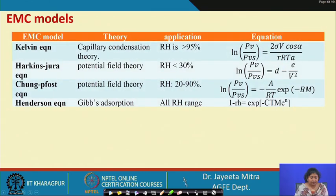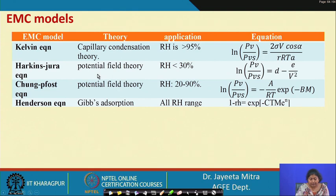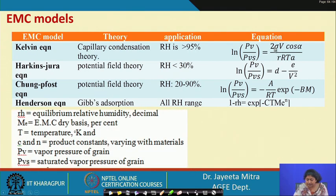There are different equilibrium moisture content models that work for different ranges of relative humidity. As the relative humidity range changes, the curve pattern changes, so different equations apply — some derived empirically, some based on physical principles. The Kelvin equation is based on capillary condensation theory and valid for RH greater than 95 percent: ln(PV/PVS) = 2σV·cosα / (r·R·TA). The Harkins-Jura equation is based on potential field theory, valid for RH less than 30 percent: ln(PV/PVS) = D − E/V².